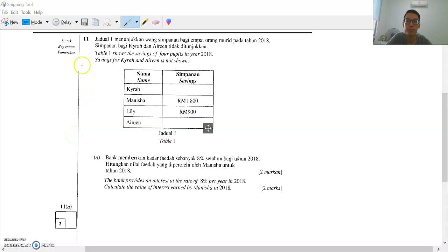Hi, good morning everyone. Let's continue with Question 11. Table 1 shows the savings of four pupils in 2018. Savings for Kaira and Irene are not shown. We have four pupils here: Kaira, Manisha, Lily, Irene, and these are their savings, simpanan. You save in a bank.